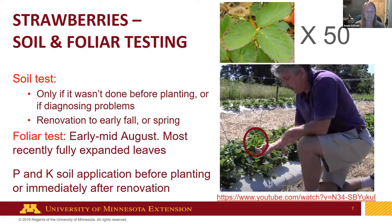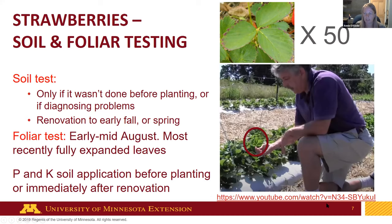Soil testing doesn't have to be done this time of year — it can be done in spring or during renovation — but we do recommend a soil test every time you plant a new strawberry patch. Foliar testing, however, is a really good time to do right now. A helpful video by Marvin Pritz at Cornell demonstrates how to do foliar sampling on blueberries, strawberries, and raspberries. Collect the fully-trifoliate leaf, about 50 of them per sample. Collect separate samples for problematic parts of the field versus healthy parts so you can diagnose issues.